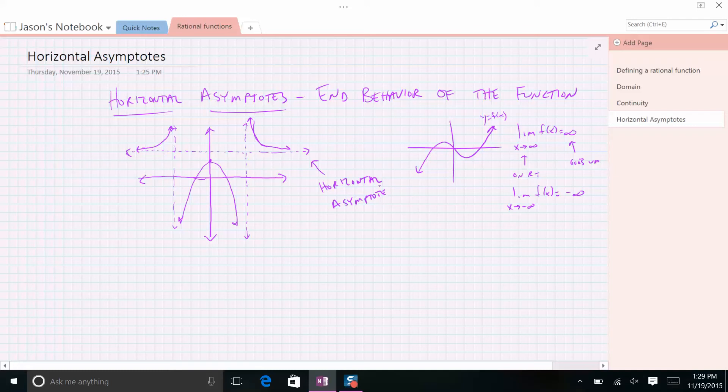It describes end behavior. The limit as x approaches, if this is g(x), this graph is g(x), let's say. The limit as x approaches infinity of g(x) is, what y value is that, 3? It's approaching 3, because as we go on forever here, we get closer and closer to this asymptote, never getting there. So the y value we approach the further right we go is 3.